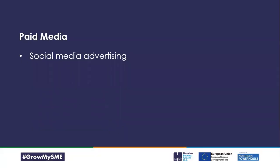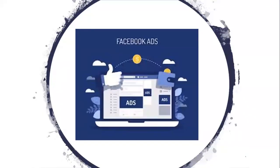For paid media, the best way to spend a small amount of money is social media advertising. There is probably no more effective, efficient, or affordable method than Facebook ads. Facebook has fantastic algorithms so you can target very specific audiences based on their interests. You can run adverts for a very nominal amount of money and get fantastic insights. Facebook is a great place to go if your audience is there.